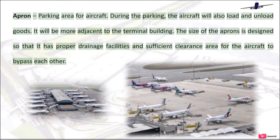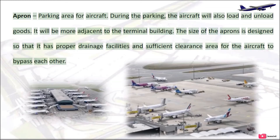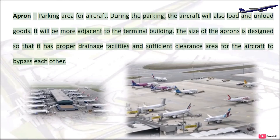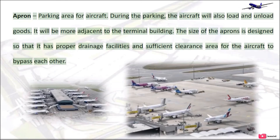Apron: A parking area for aircraft. During parking, the aircraft will also load and unload goods. It will be more adjacent to the terminal building. The size of the aprons is designed so that it has proper drainage facilities and sufficient clearance area for the aircraft to bypass each other.